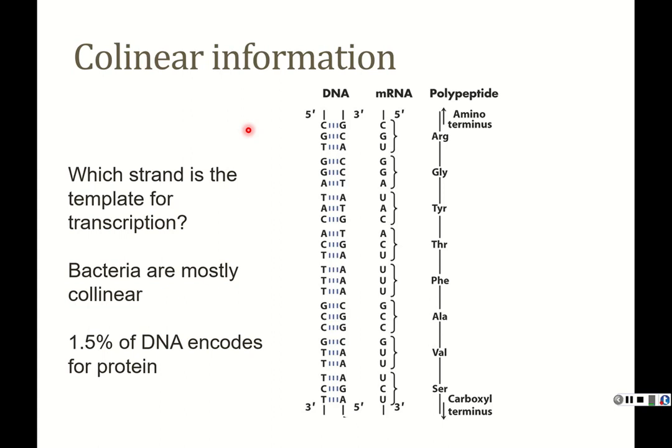We term this co-linear information because you have two strands of DNA, one going five prime to three prime and the complementary strand going in the opposite direction. That DNA is then turned into messenger RNA through transcription, and the messenger RNA is turned into protein through translation. In a nutshell, that's the central dogma of biochemistry, which we'll be discussing in the next few lectures at the end of this semester.